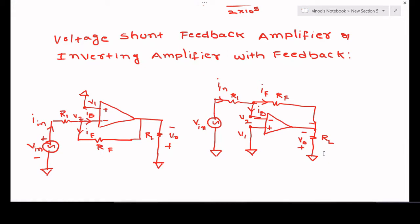This is an inverting amplifier with feedback. We apply the input signal to the inverting terminal of the op-amp. The feedback is given in shunt with respect to the input — we take a sample of the output voltage and feed it back in shunt with respect to the input voltage. That is why this is called a voltage shunt feedback amplifier.